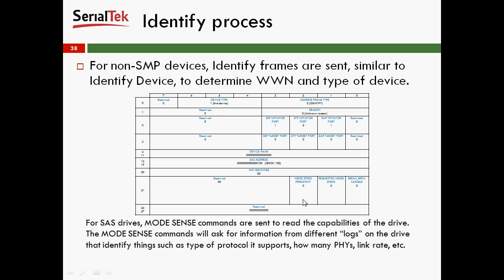Next is the identify process. For non-SMP devices, identify frames are sent — similar to identify device in Serial ATA — to determine the worldwide name and the type of device. In the frame details view of an identify frame: device type is 1 (end device), address frame type is 0 (identify frame), no reason specified, there is an SSP initiator port and an SMP initiator port, and the device name and device address are listed.